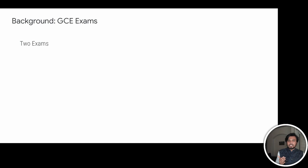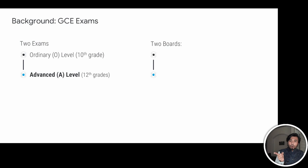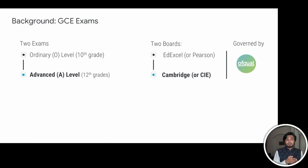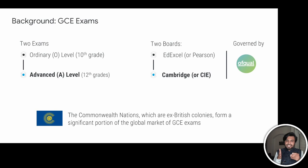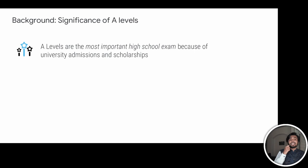When it comes to background, there are two things to learn. First, what are these GCE exams? They are international exams that evaluate a high school student's competency. There are two types — O-levels and A-levels — and our focus today is on the A-levels. Both exams are administered by two boards, Edexcel and Cambridge, and our focus today is on Cambridge, or CIE. These boards are governed by an agency called Ofqual, the Office of Qualifications and Examinations Regulation, in the UK. The Commonwealth nations — ex-British colonies — form a significant portion of the global market share for these GCE exams.